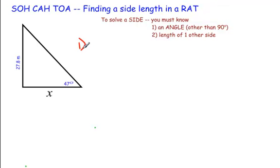First thing you have to do is label the sides, and you're going to do that with respect to the angle that you're given. We're given this angle here. We'll call it angle A.